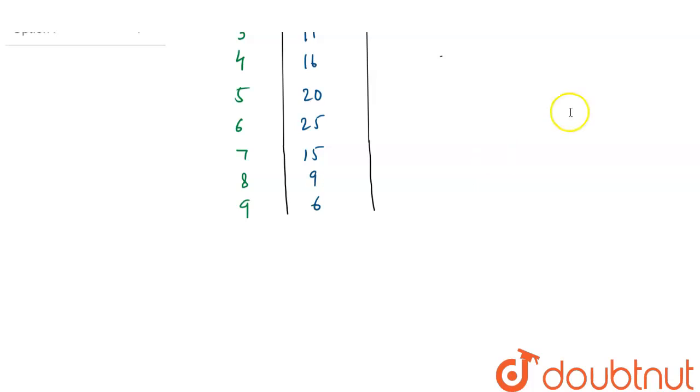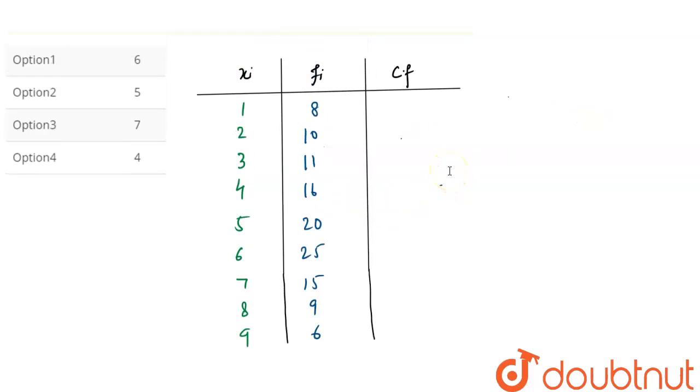So how are we going to calculate the cumulative frequency? First we take 8, then we will add this 8 to the next frequency. So 8 plus 10 is 18, then 18 plus 11. Similarly we're going to calculate further. 18 plus 11 which will be 29.